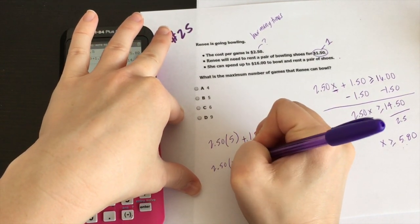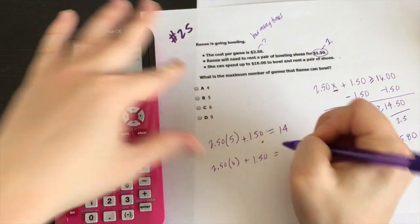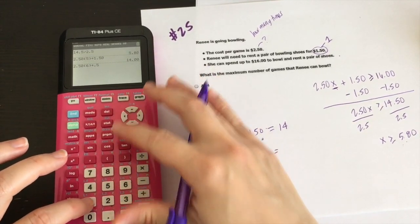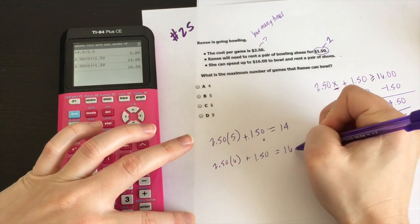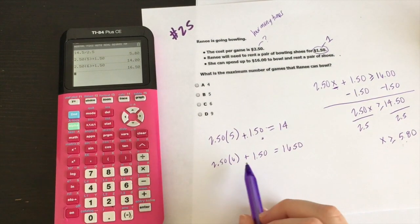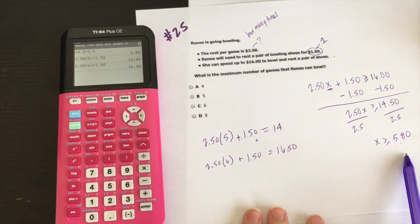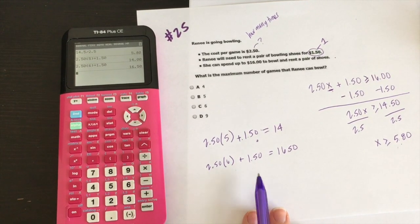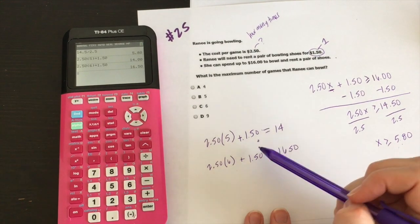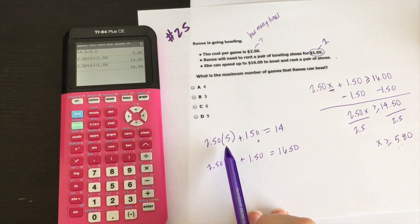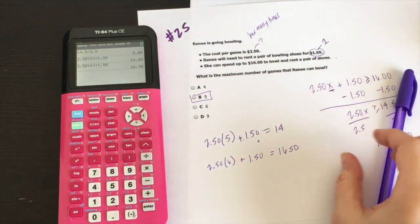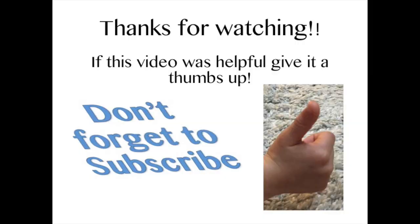If she does six games, let's see how much. So $2.50 times six plus $1.50 for the shoe rental. That's $16.50. Notice here she cannot do six because that's what I wanted to point out here. You can't round this up to six. And the reason you can't do that is because she doesn't have enough money. So here in this situation, you kind of have to round down. So she can play five games and that will cost her $14. And the answer here is five. If this video was helpful, give it a thumbs up. And don't forget to subscribe. Thanks for watching.